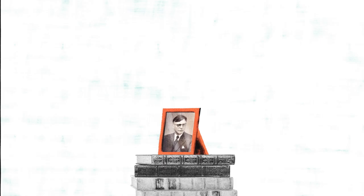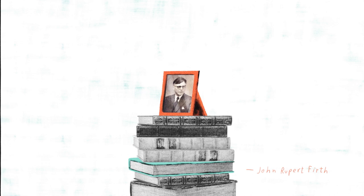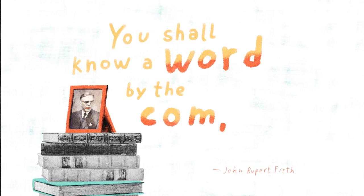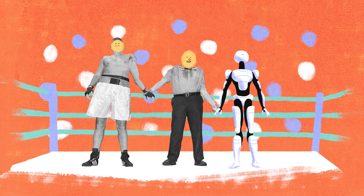The British linguist John Rupert Firth described this approach to language processing memorably: 'You shall know a word by the company it keeps.' Both humans and machines know a word by its verbal entourage, but we still have the upper hand.